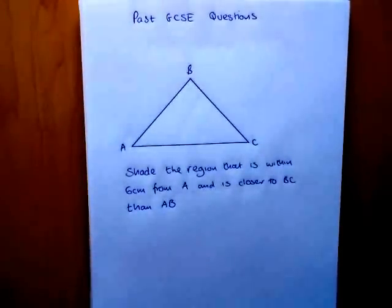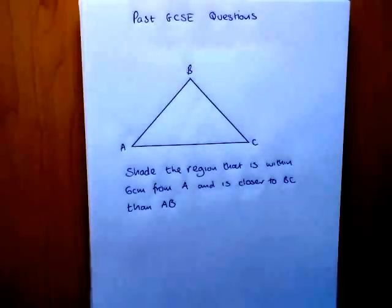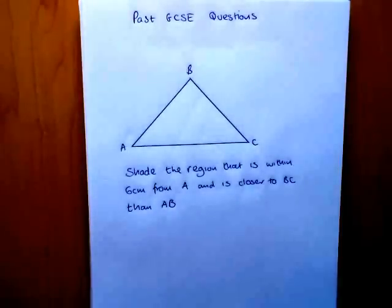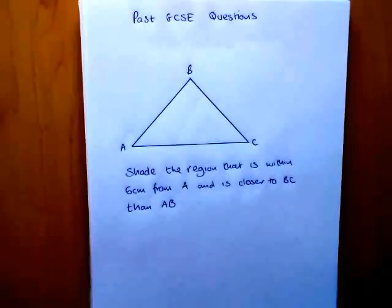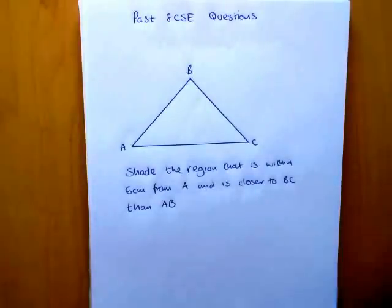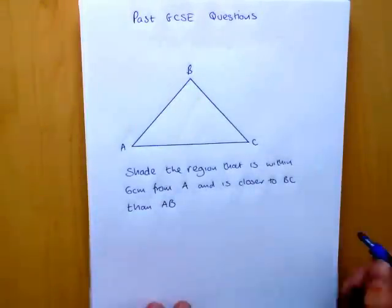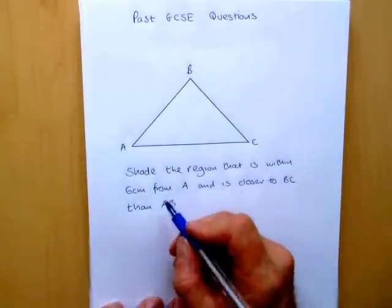This is a past GCSE question using some loci techniques. We've been asked to shade the region inside this triangle that's within 6 cm from A, but also closer to BC than AB. So we've already got two separate conditions here.